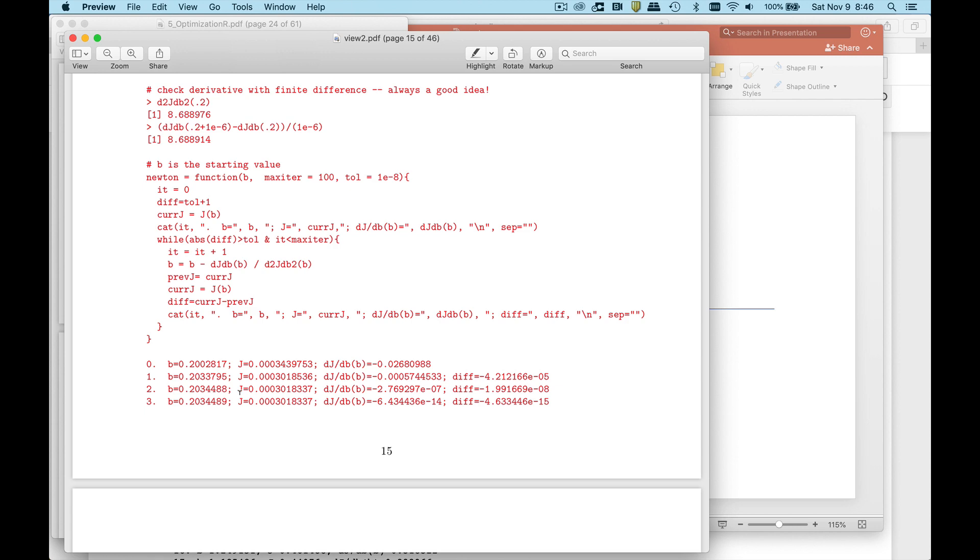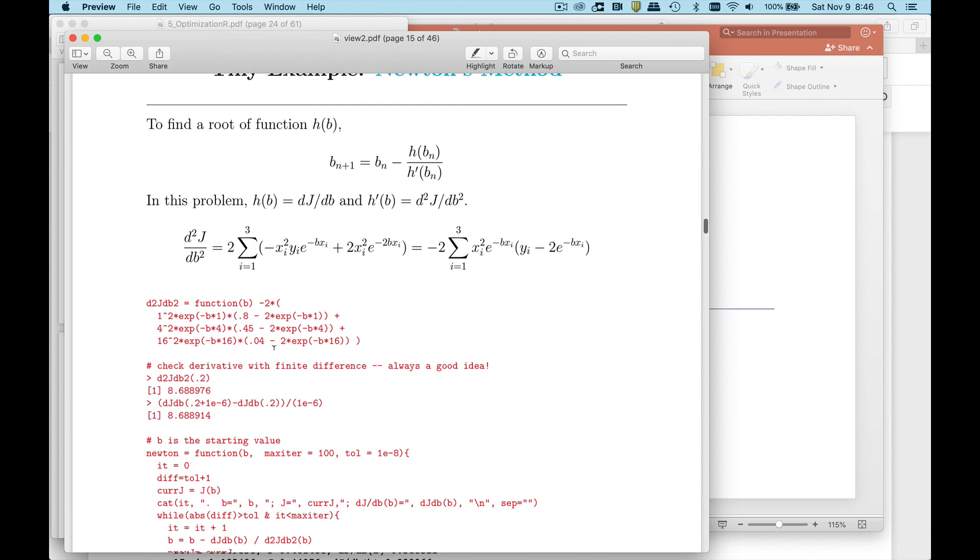Now there's a problem with Newton's method. The problem is that it requires us to know what this second derivative is, the second derivative of the cost function. Now you're probably thinking that's not a big deal with this little tiny problem and you'd be right. But when we go to multivariate problems, finding this second derivative of the cost function can be computationally very expensive. So we'd like to find a way to avoid this.